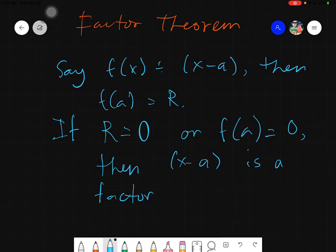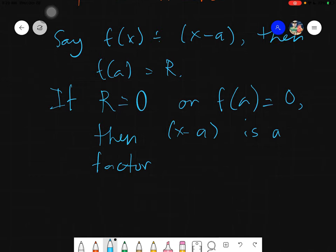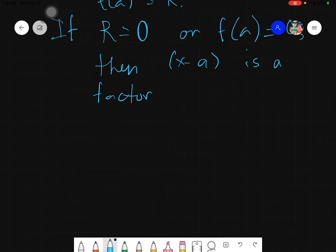Then f of a is equals to r, and this is by the remainder theorem. Now if and only if r equals 0, or your f of a equals 0, meaning your remainder is equals to 0, then x minus a is a factor.